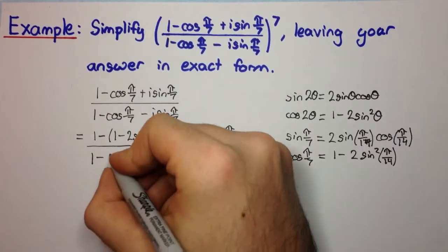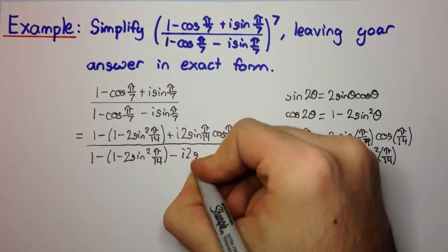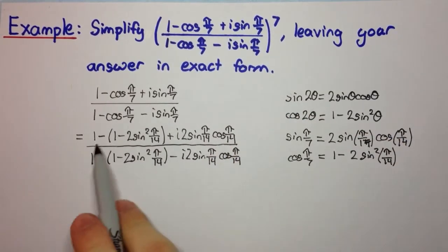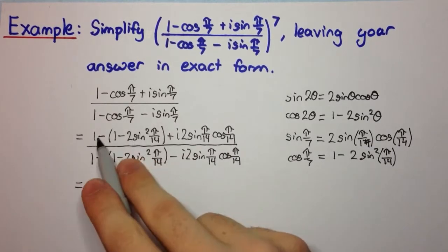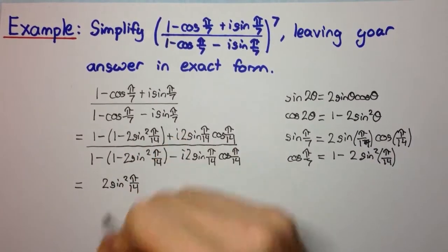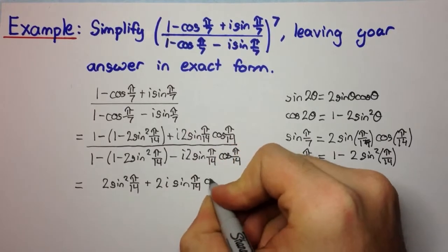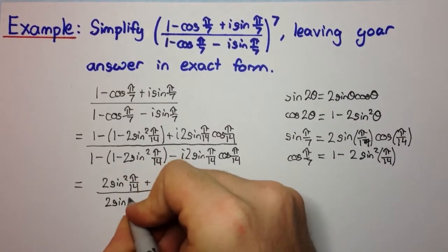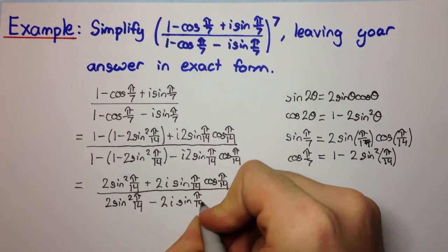The denominator is the same but with a minus instead of a plus for the imaginary part. Simplifying the numerator: the 1 minus 1 gives 0, and minus times minus 2·sin² gives positive 2·sin²(π/14), plus 2i·sin(π/14)·cos(π/14). The denominator similarly gives 2·sin²(π/14) minus 2i·sin(π/14)·cos(π/14).